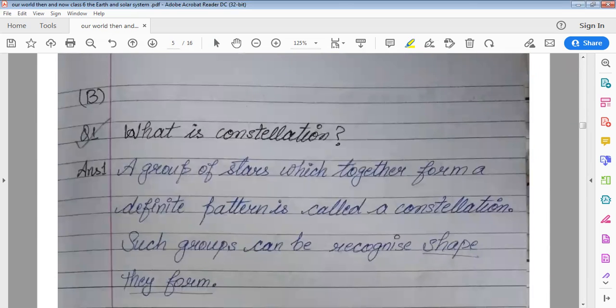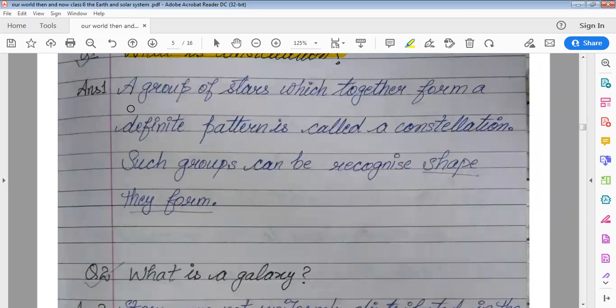What is constellation? A group of stars which together form a definite pattern is called a constellation. Such groups can be recognized by the shape they form.